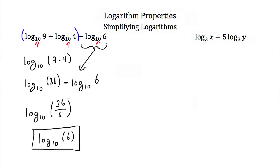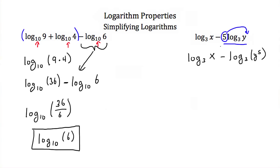Here we have the log base three of x minus five times the log base three of y. I notice a subtraction sign, so I'll use the quotient property. But first, I want to look at the second term — five times the log of y. Using the power property in reverse, I take this five and make it the exponent of y. So this becomes the log of x minus the log of y to the fifth power. Now I can combine using the quotient property, giving us the log base three of x divided by y to the fifth power.